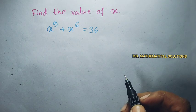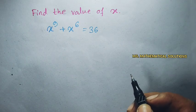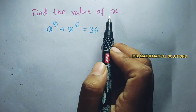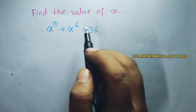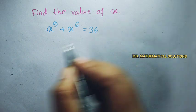Hello students, today I solve a nice algebra problem which is find the value of x of the equation x to the power 9 plus x to the power 6 equal to 36. Let's see the solution.